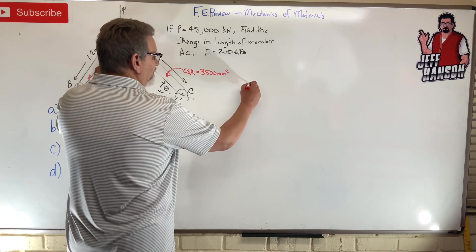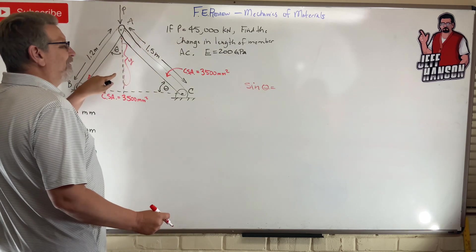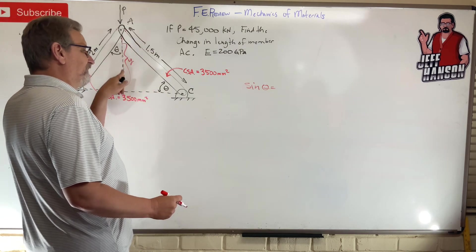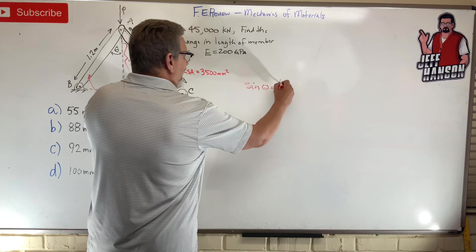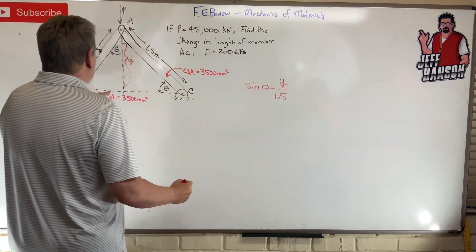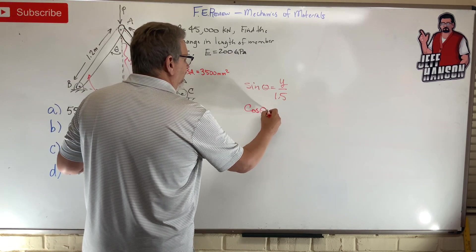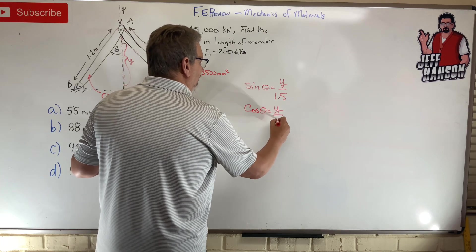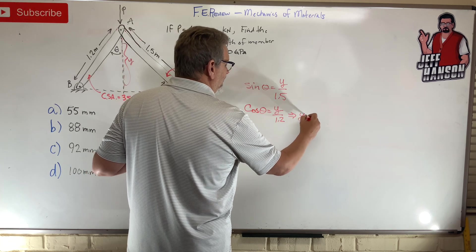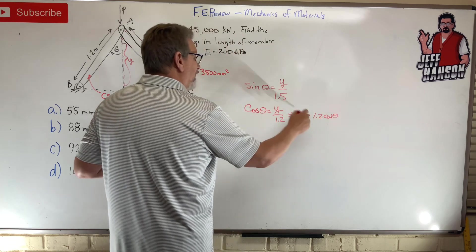Let's do sine for this one, okay? Because y is the opposite side on that triangle. So opposite y divided by hypotenuse 1.5. Cool. This one, the y is adjacent, so let's do cosine. Okay, equals y divided by 1.2. Let's solve this guy for y, so y is equal to 1.2 cos theta. Okay, plug that one in for that y right there.